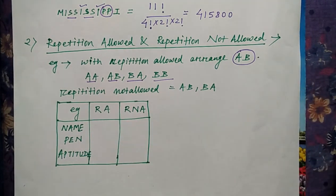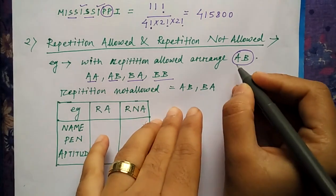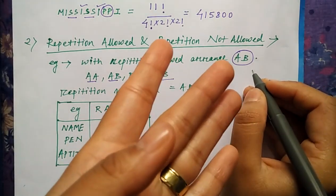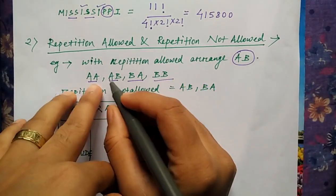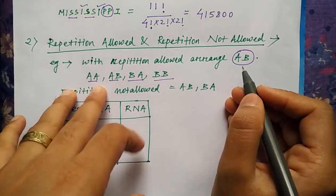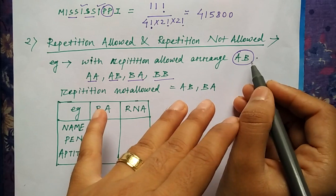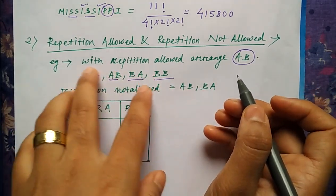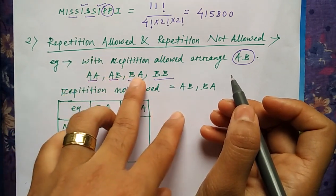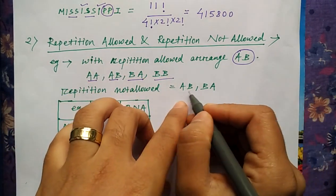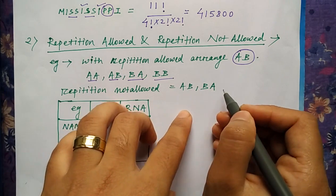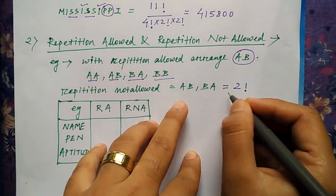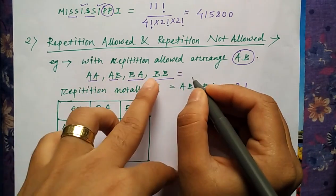In the last class, I told you a little bit about this. A word is given — A, B — where repetition is allowed. So how can you write the letters? You can write A, B and B, A. Repetition allowed means each alphabet can be repeated, so you can also write A, A and B, B. So totally how many ways can you write it? Four ways. Where repetition is not allowed, you can only write either A, B or B, A — so this is 2 factorial, which is 2 ways. And 4 ways is 2 to the power 2.